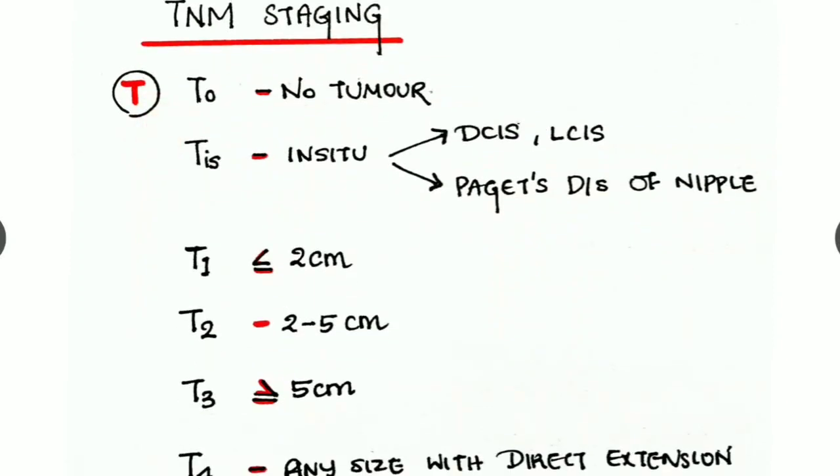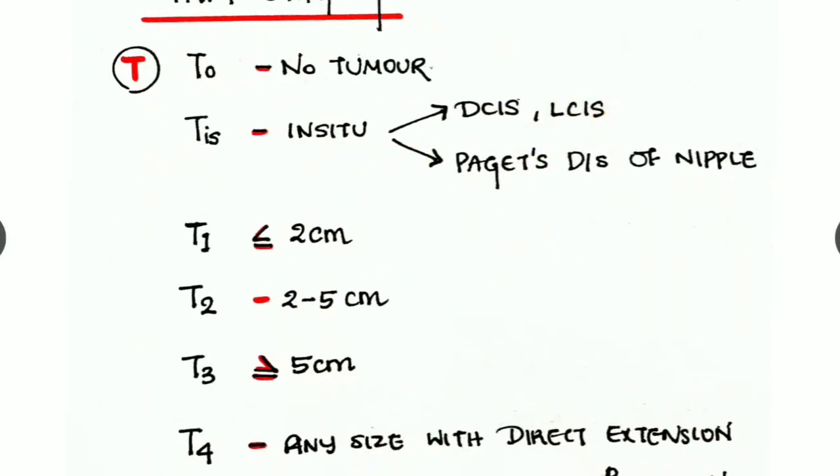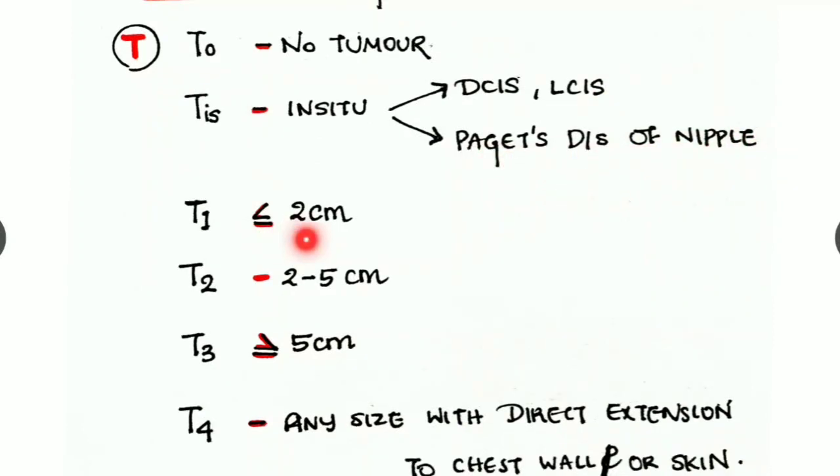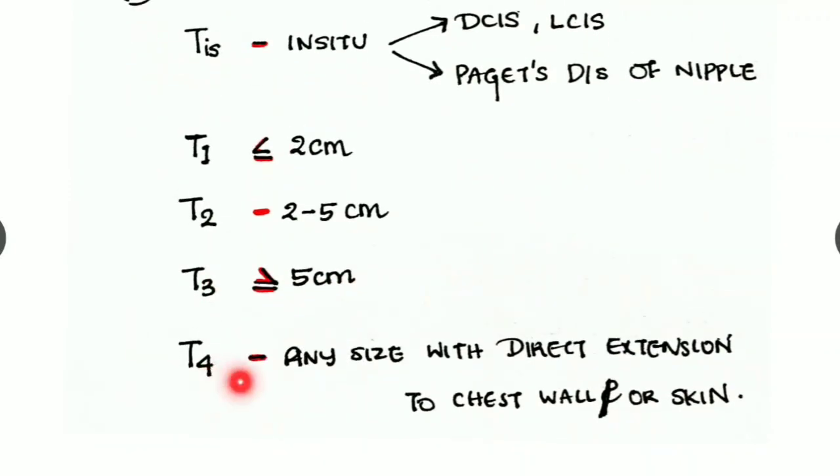Let's look into the TNM staging. T for tumor: T0 is no tumor, TIS means in situ - it can be ductal in situ carcinoma or lobular in situ carcinoma or even Paget's disease of the nipple. T1 where the size is less than or equal to 2 centimeters. T2 where the size is between 2 to 5 centimeters. If the lesion size is more than or equal to 5 centimeters it is T3. And T4 where any size of the lesion with direct extension to the chest wall and/or the skin.